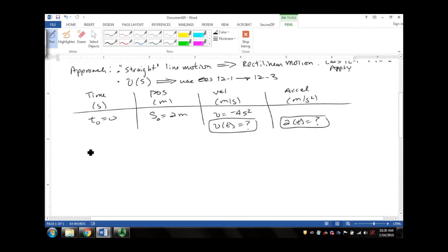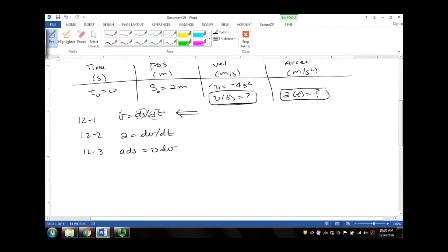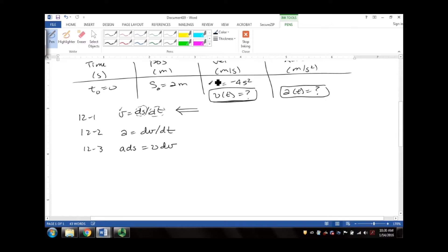So if I write equations 12.1, 12.2, and 12.3, what we want to do is find the expression for velocity as a function of time. So I immediately am drawn to this equation because I know something about velocity, and it's this variable that I want to solve for in terms of this variable.